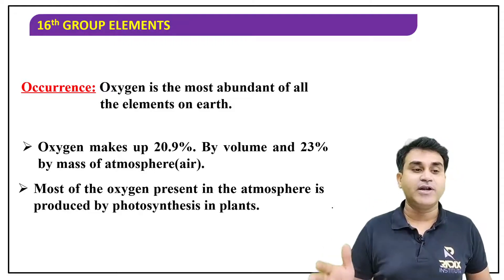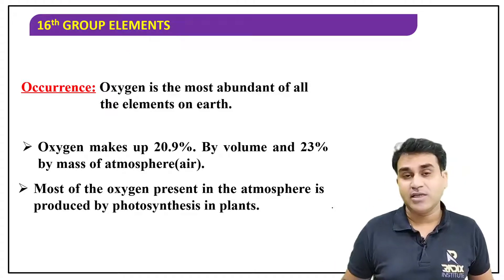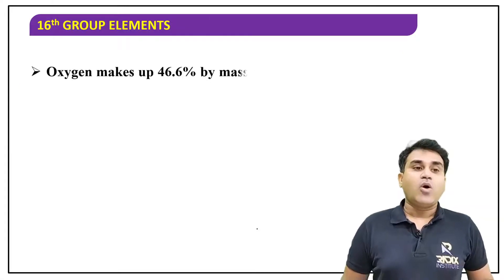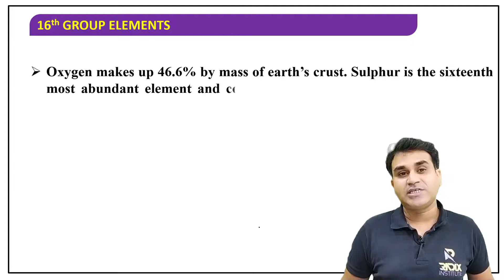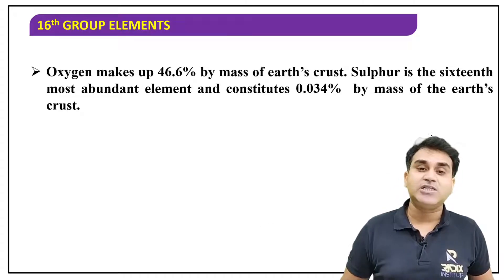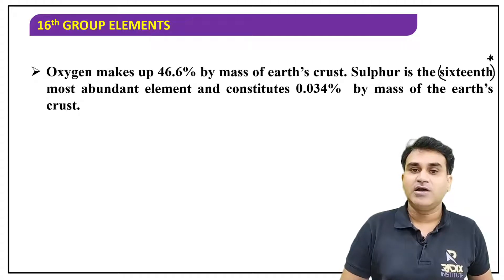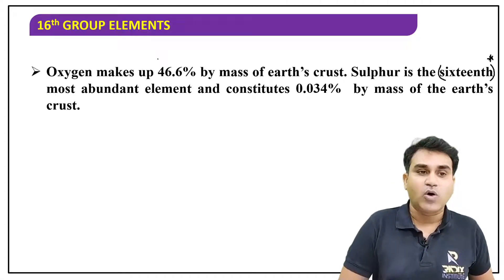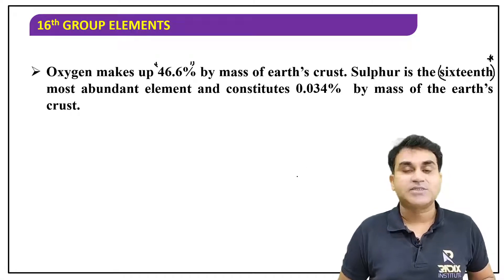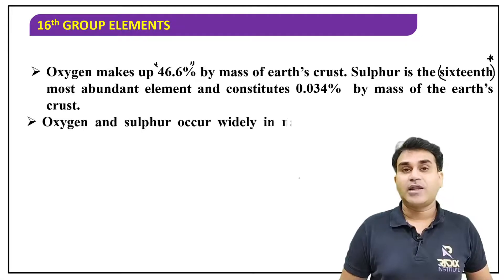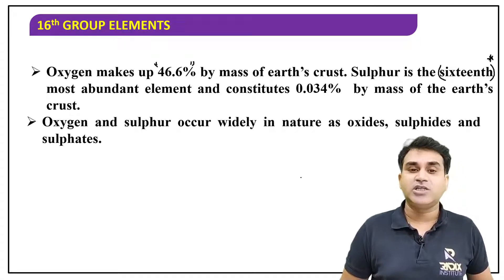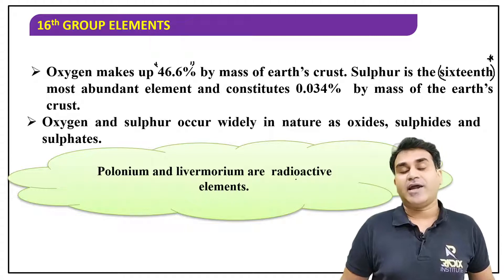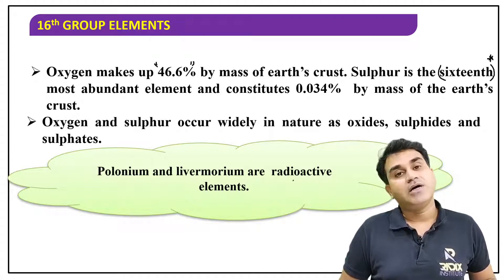Oxygen makes 23 percent by mass of the air. Most of the oxygen present in the atmosphere is produced by photosynthesis in plants. Oxygen makes nearly 46.6 percent of the Earth's crust, whereas sulfur is the 16th most abundant element — nearly 0.034 percent. Oxygen and sulfur occur widely in nature in the form of oxides, sulfides, and sulfates. Polonium and livermorium are radioactive elements — the last two elements are radioactive.